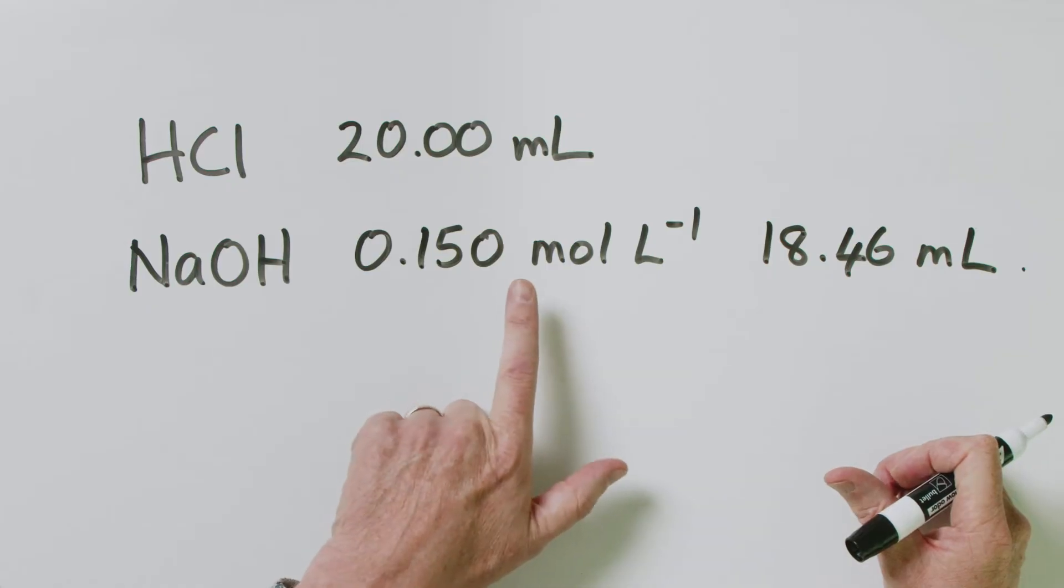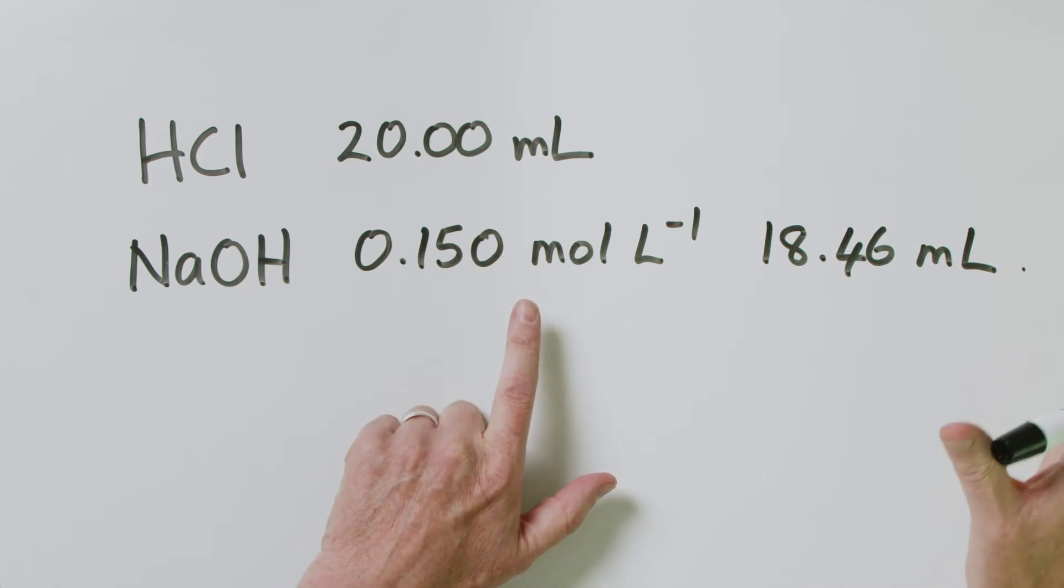And that is pretty much always the question that you are asking whenever you do a titration. You're trying to find the concentration of an unknown solution. So, where to begin? Well, like any stoichiometry problem, and that is all that this is, it might be a titration, but when we're doing the calculations, it's just a stoichiometry problem. What have we got? What have we been given? What are the pieces of data that we know?